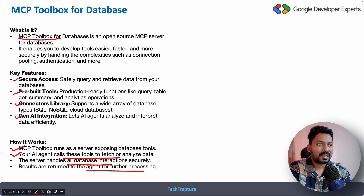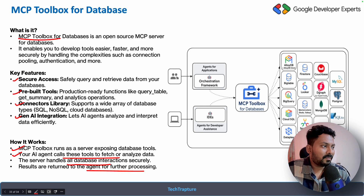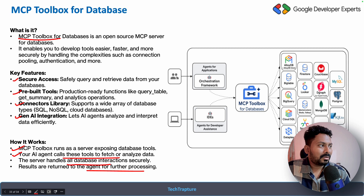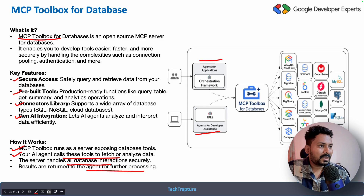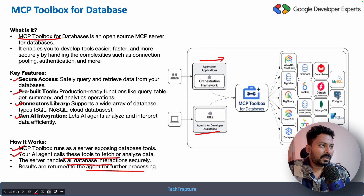The supported databases are closely aligned with the Google Cloud ecosystem: AlloyDB, Bigtable, BigQuery, Cloud SQL, Dataplex, Spanner, Memorystore, and even MongoDB. You can connect from your IDE such as VS Code or Cursor, and also from an agent like ADK or LangGraph. In this video we are looking at the demo using the IDE, and in the next video we will create the ADK agent with MCP toolbox for database.